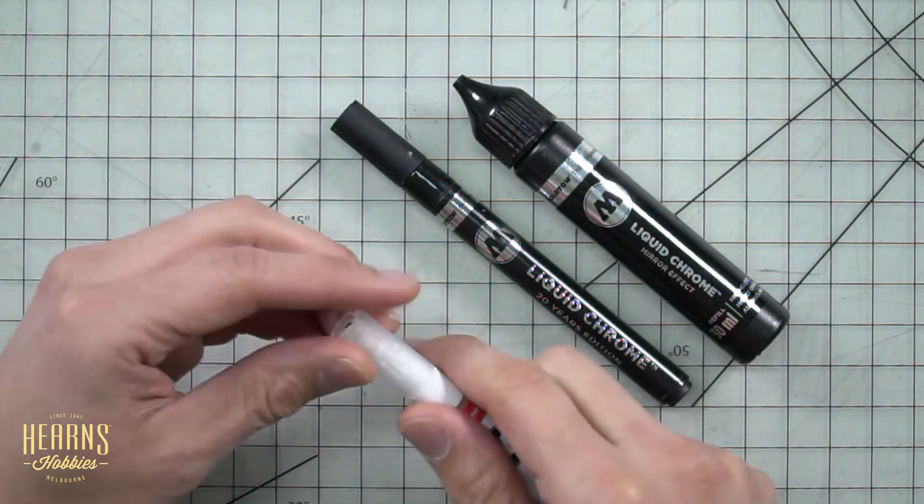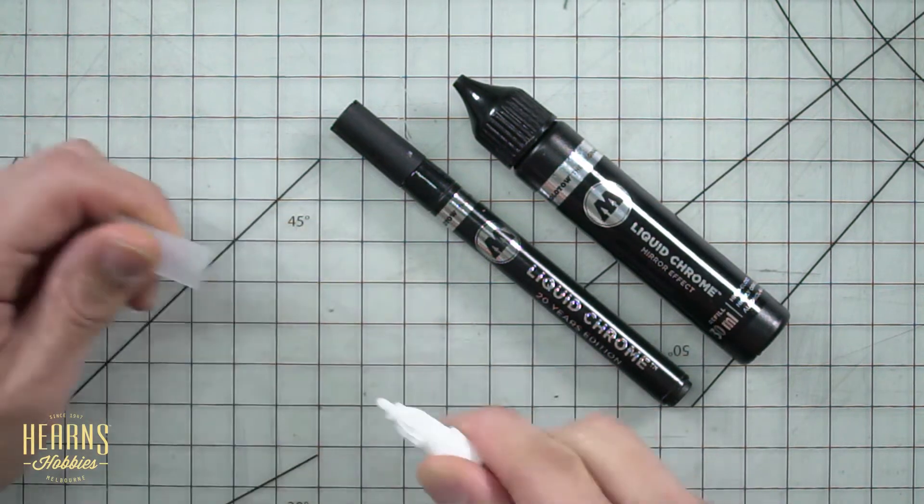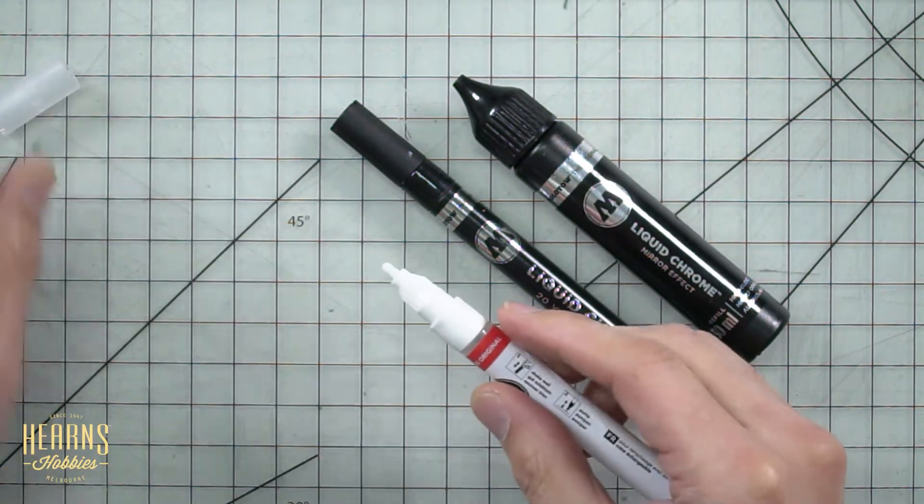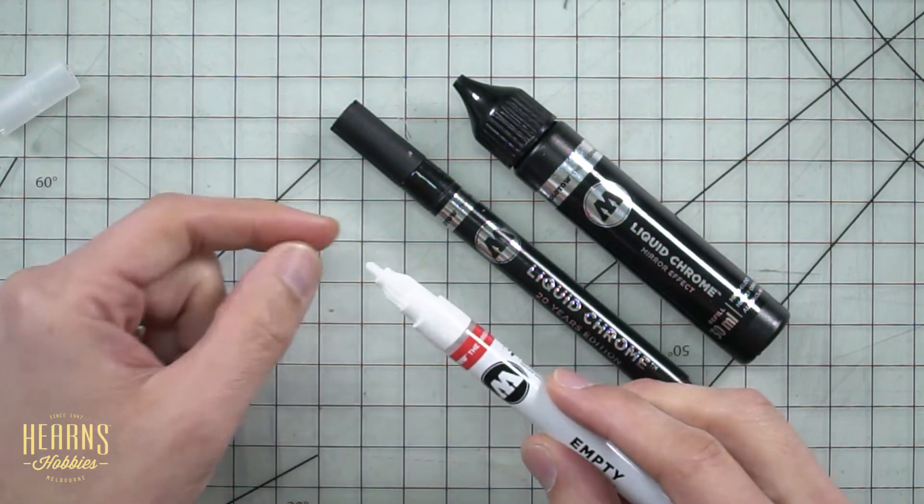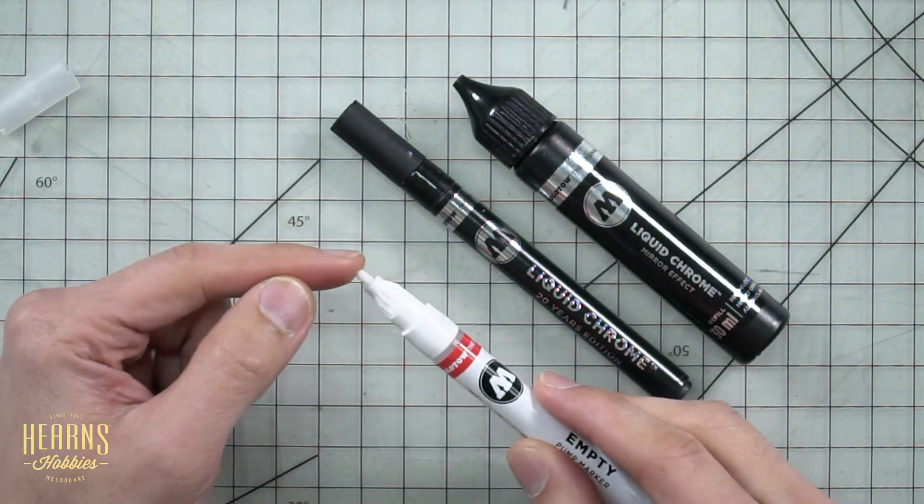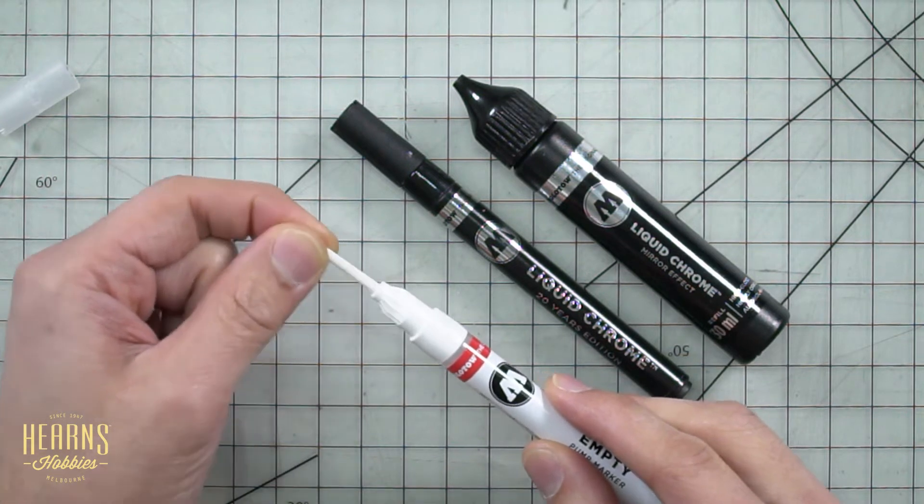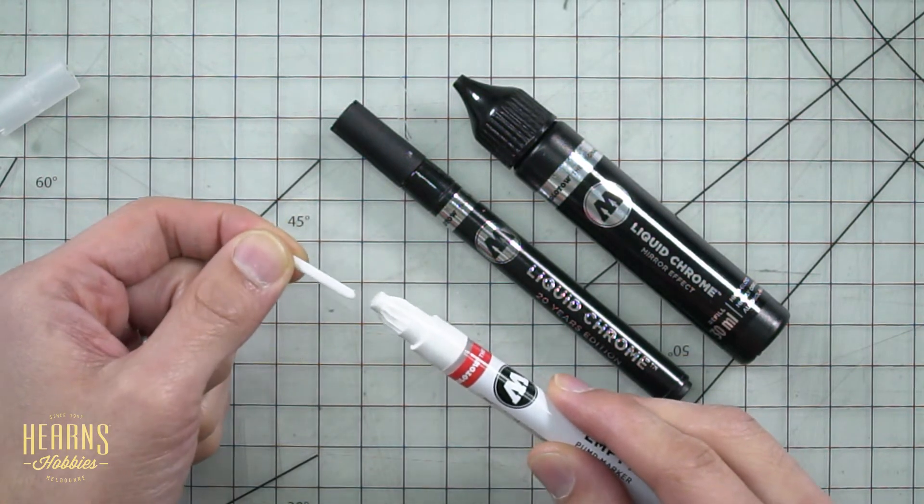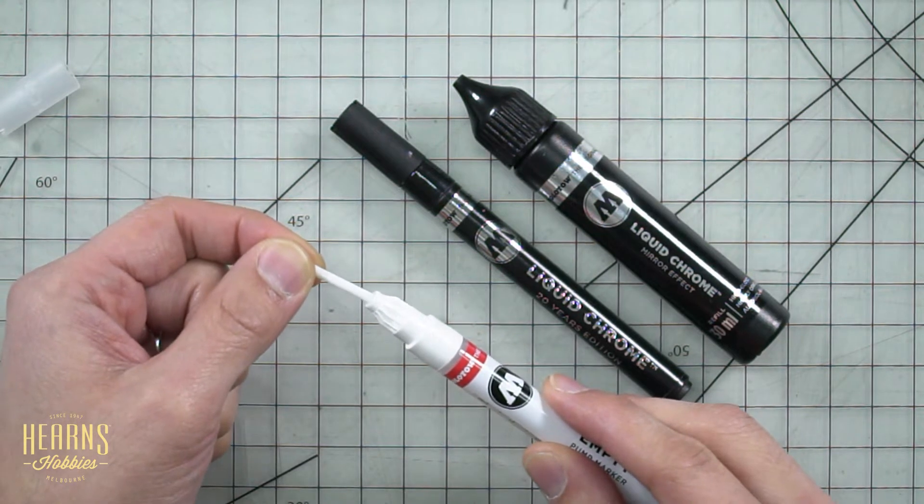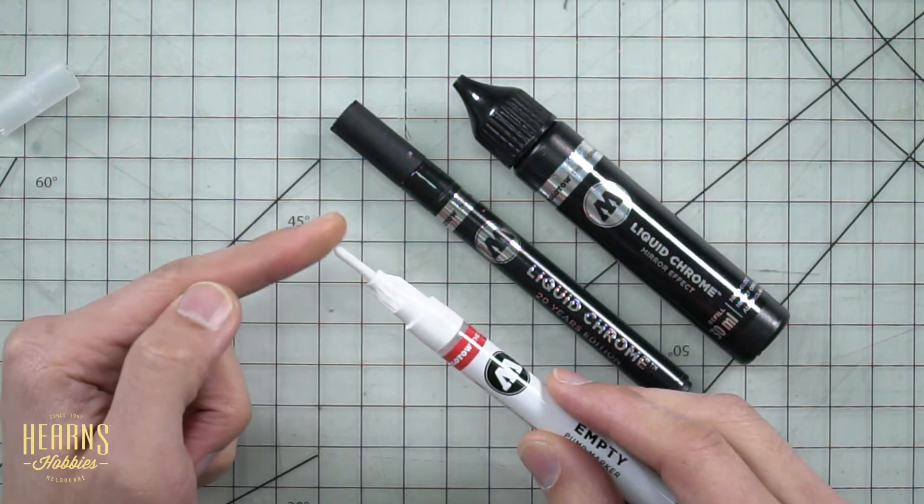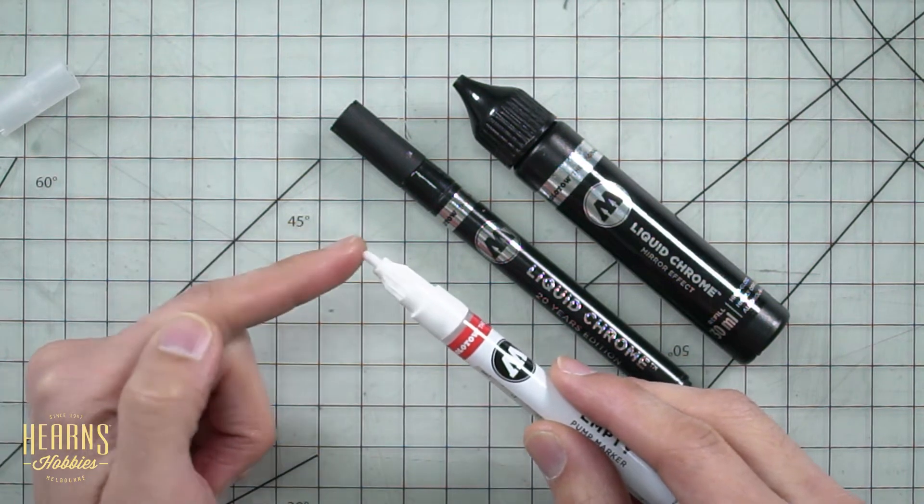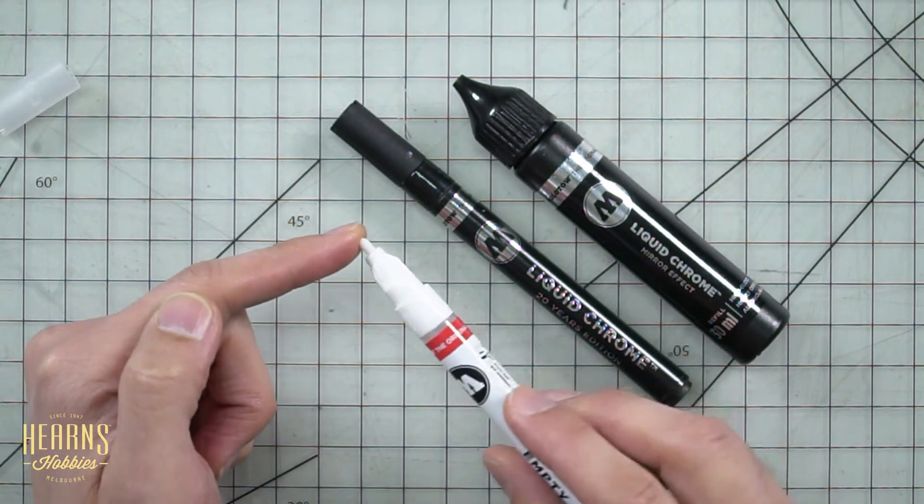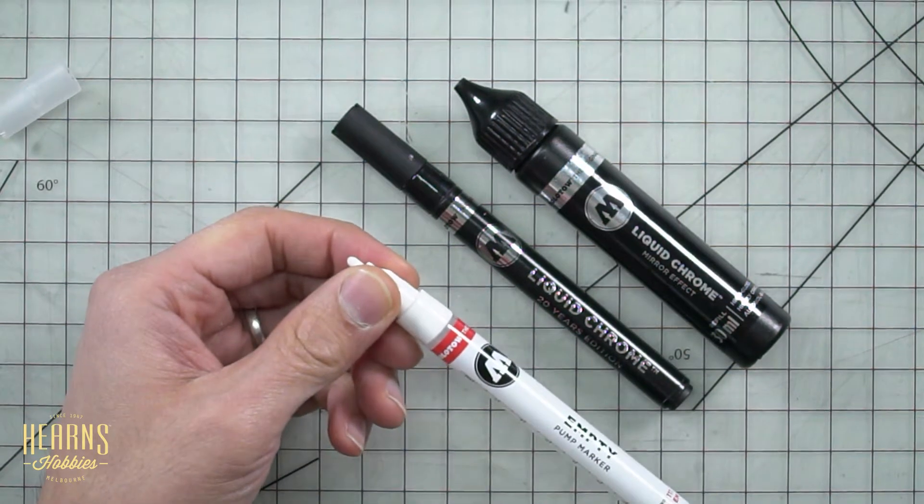Here's the cap, so the cap normally just pulls off. Now this one, you can see here, this is the two mil, so it's got the broader tip on it. The one mil is basically the same type. These just pull out because they're actually replaceable. The end is the felt tip which is where the chrome paint is absorbed from, and then the end of the one mil just has a standard steel tip with a finer end.